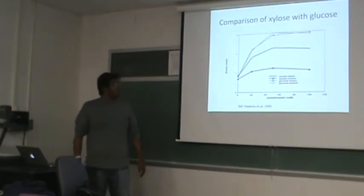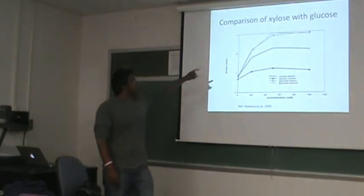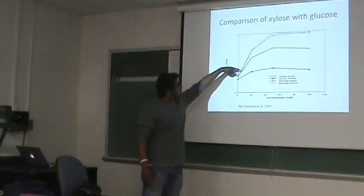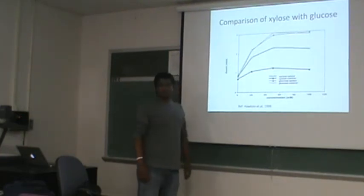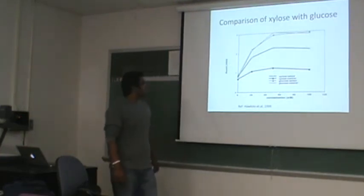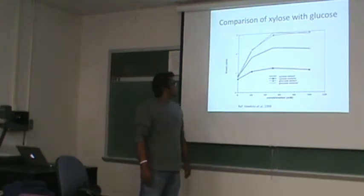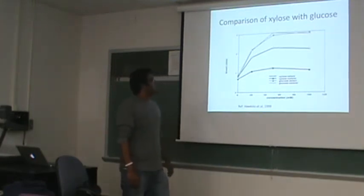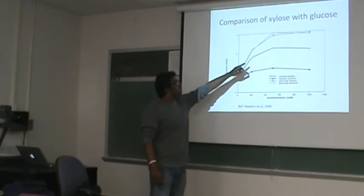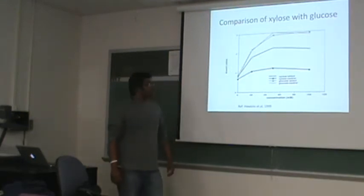These were some of the results that were actually produced by them. You can see that the top one is the glucose and the bottom one is the xylose consumption over time, based on the growth rate of the algae biomass. And you can definitely see that there is some amount of xylose that is being consumed by the algae, the Chlorella species.